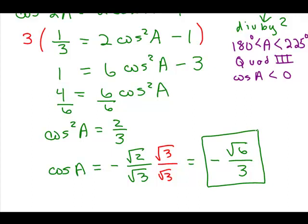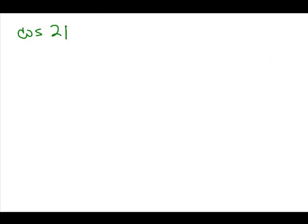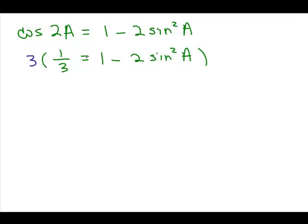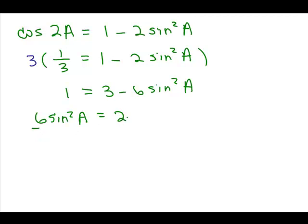Now we could use another formula for the cosine of 2a to find the sine of a. The formula is cosine of 2a equals 1 minus 2 sine squared a. We already found that a is in quadrant 3, so the sine will be negative. Putting in 1/3 and multiplying everything by 3, we solve and get 6 sine squared a equals 2.